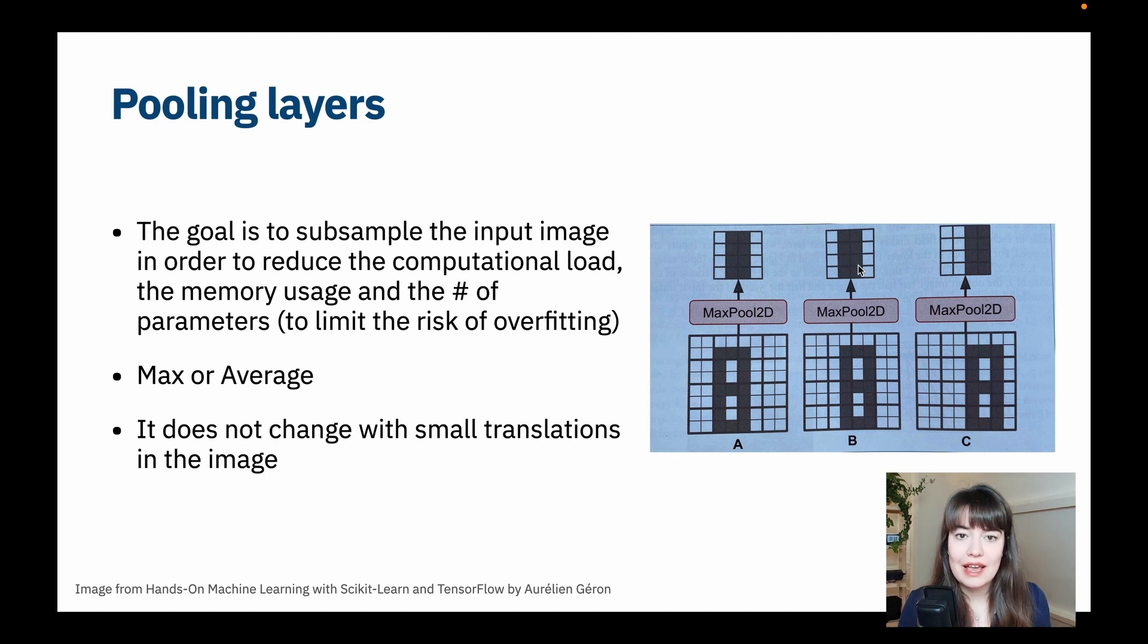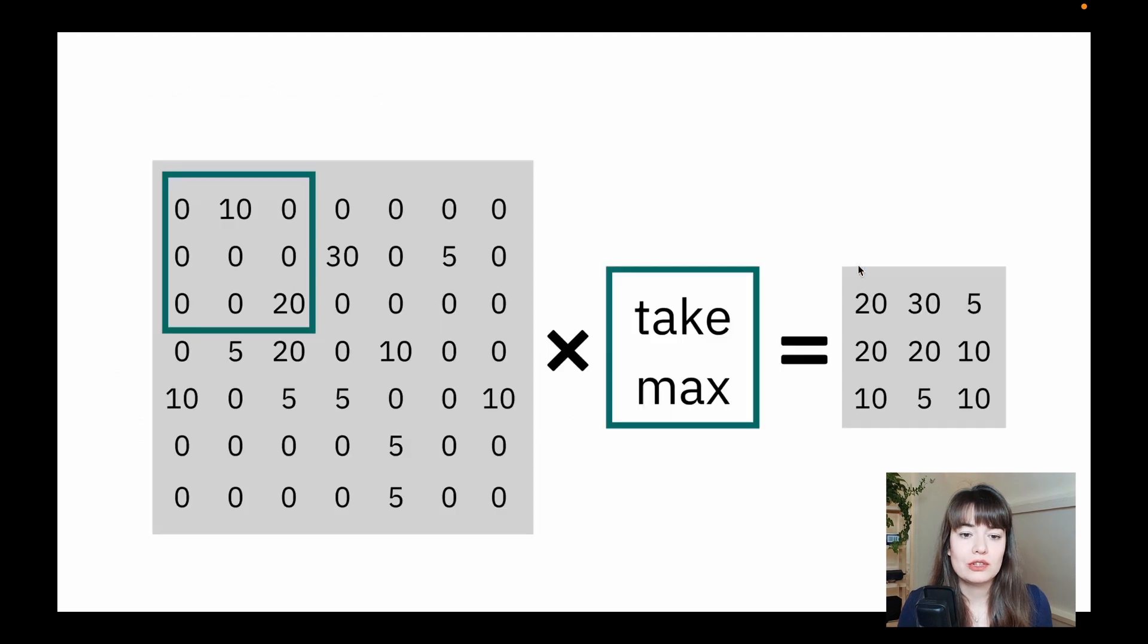But okay, how does that actually work? What do we do in a pooling layer? So let's see that. So basically, it is very similar to the filter layer. The only thing is that you do not do any calculations. If it's a max pooling layer, all you do is you go put your filter or window on top of the image, and then you take the max number that is inside this little filter or inside this little window, and then you put the image in the resulting matrix or put the value in the resulting matrix.